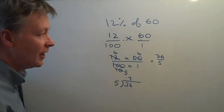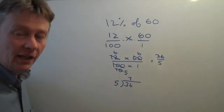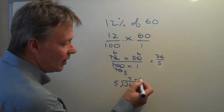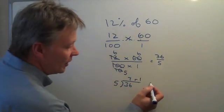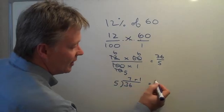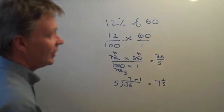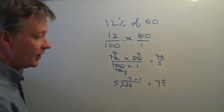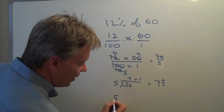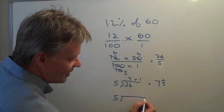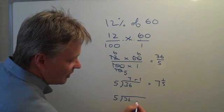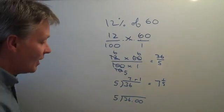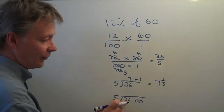So I'm going to make this into a decimal. As shown in other videos, I can either keep the remainder of 1, in which case the answer is 7 and 1 fifth — which is 12% of 60 — or I can use the same calculation to work it out as a decimal. To do that, I'm going to put 2 decimal places after the 36. So 5 into 3 doesn't go; 5 into 36 goes 7.